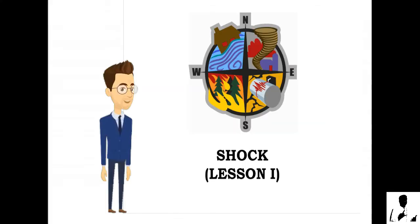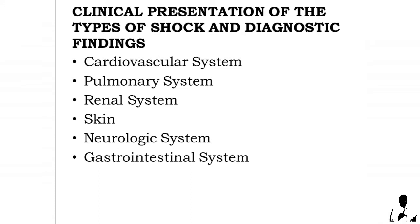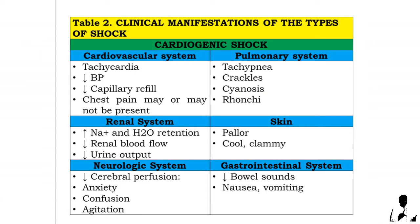Table 2 summarizes the clinical presentations of the types of shock and diagnostic findings, specifically in the cardiovascular system, pulmonary system, renal system, skin, neurologic system, and gastrointestinal system. Under cardiogenic shock, signs and symptoms in the cardiovascular system are as follows.